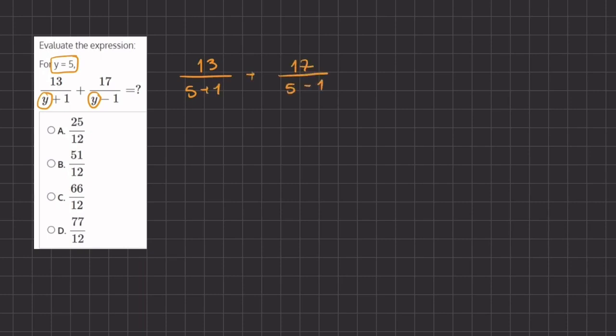When we simplify, we have 13 divided by 5 plus 1, which is 6, plus 17 divided by 5 minus 1, which is 4.